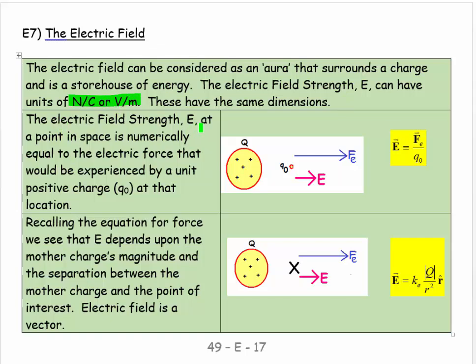The electric field strength E at a point in space is numerically equal to the electric force that would be experienced by a unit positive charge at that location. So here I have a mother charge that's causing an electric field. And I'm imagining putting a little charge in position and it will feel a force. And if that little charge has a one coulomb positive value then the force that it feels will numerically equal the electric field value. So we can say that our electric field vector is equal to our force vector divided by the charge.